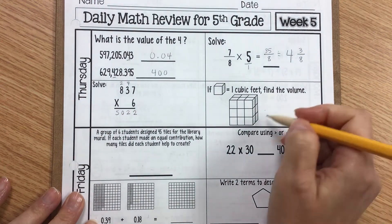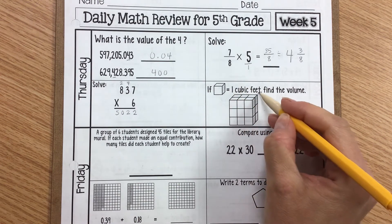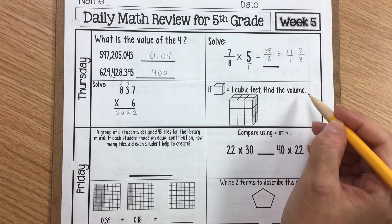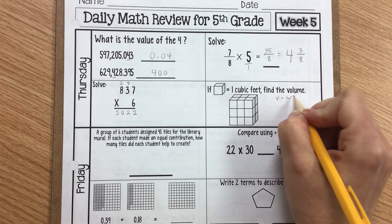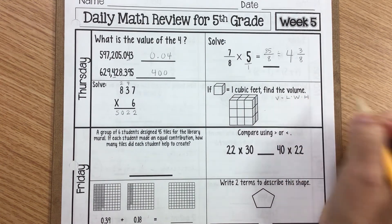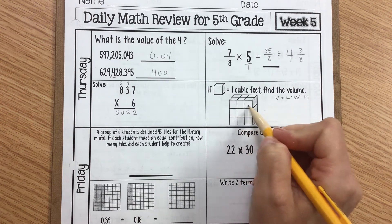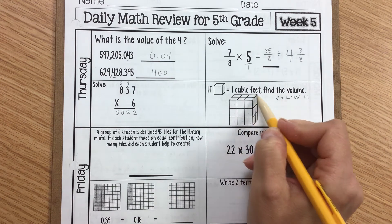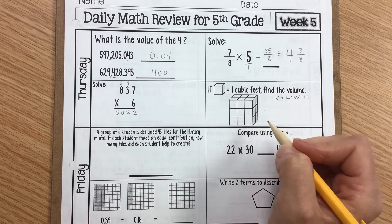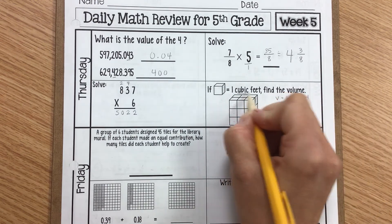Alright, last but not least for Thursday, if 1 cube equals 1 cubic feet, find the volume. So we've talked in the past about how we can find volume. Volume equals length times width times height. But another way you could do it is just count the boxes. So I have 1, 2, 3, 4, 5, 6, 7, 8, 9 in the front, and that means I have 9 in the back. So I could just say 9 plus 9 gives me 18 cubic feet.